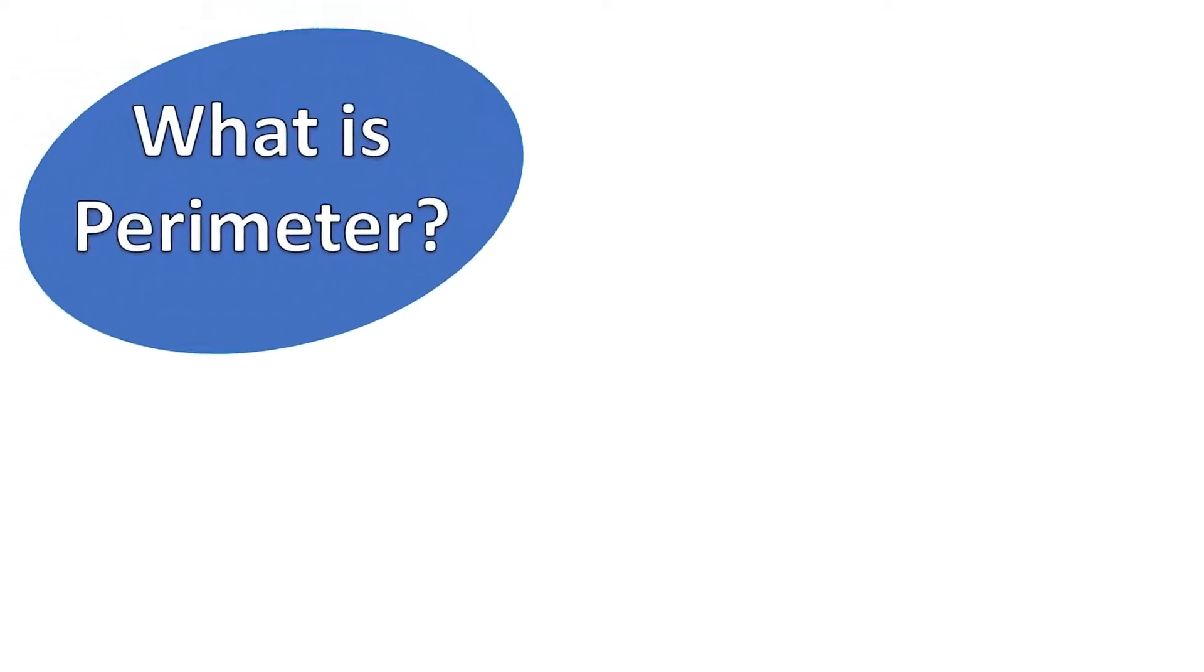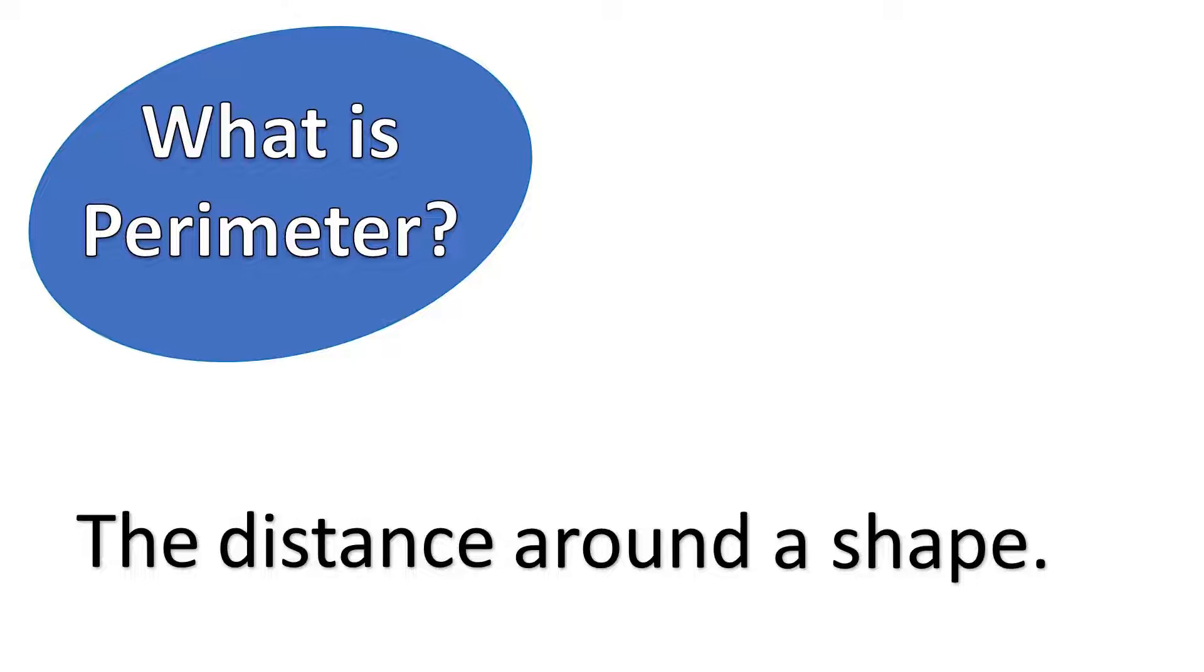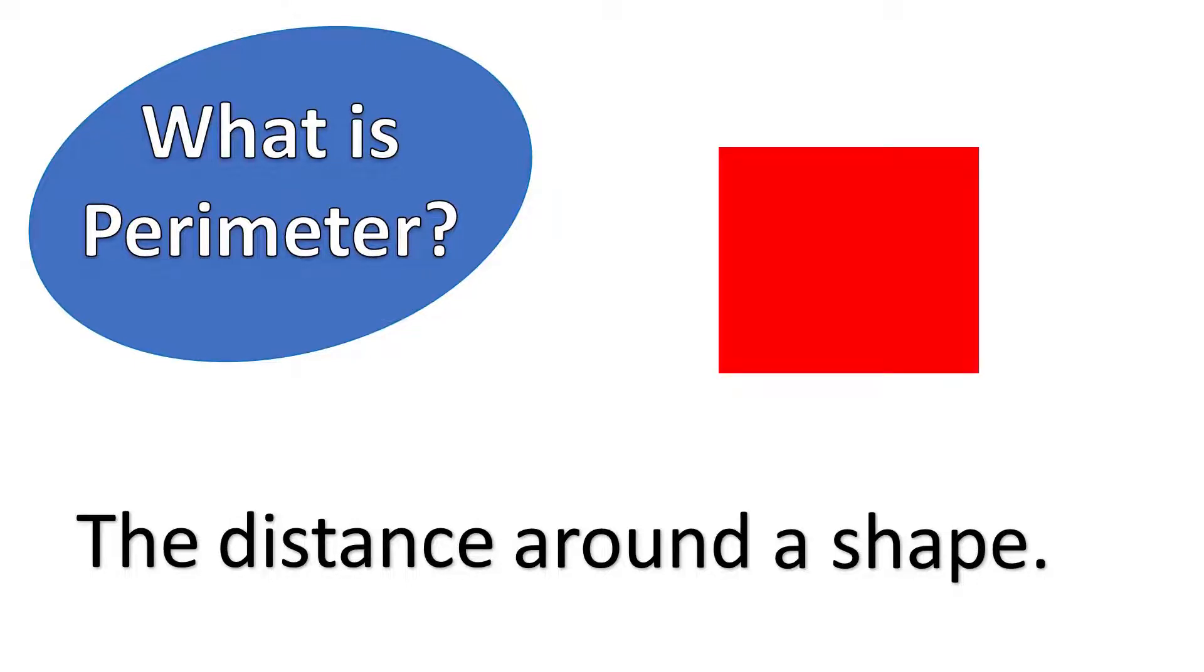So what is perimeter? Perimeter is the distance around a shape. Let's take a look at this square. If we wanted to know the distance around the square, we would look at all of the sides of the square.